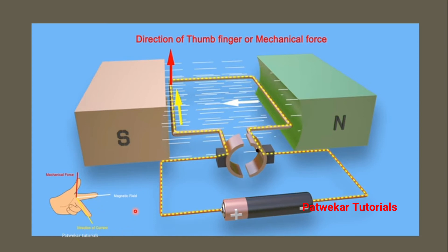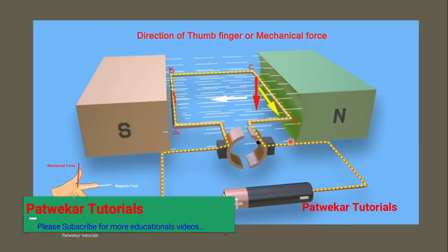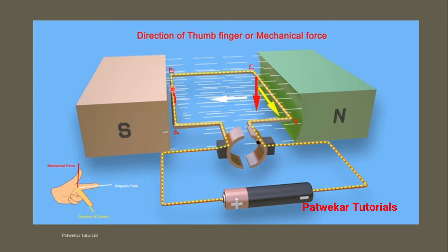So what does my Fleming's Left Hand Rule say? This is my magnetic field — because there are two magnets, the magnetic field enters between them. This is my direction of current as I switched on the cell. So if this is the direction of current and this is the magnetic field, then the mechanical force will go upward on this side. When we apply the same rule on the opposite side, the force goes downward. So one side has upward force and the other has downward force.